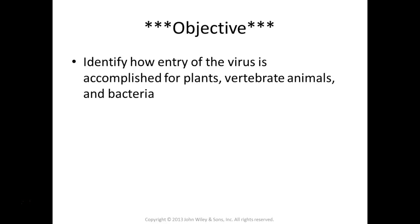Proteins make up the coat - the capsid. What they surround is the genome. The genome can be DNA or RNA - viruses are not always DNA, they could be RNA. That genetic information must, at the very least, enter into that cell. Because that's what's going to be copied into more DNA or RNA, and what's going to be used to make the viral proteins to make the capsid.